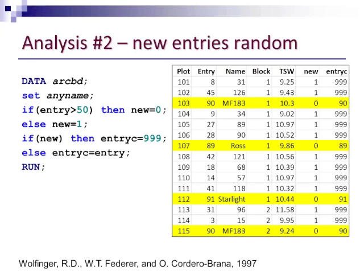For example, MF 183 is entry number 90. So this allows us then to make comparison among our checks and then a collective comparison between the mean for the new entries and any of the checks.